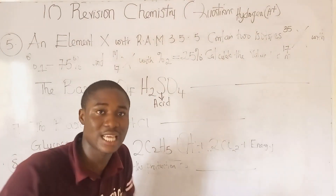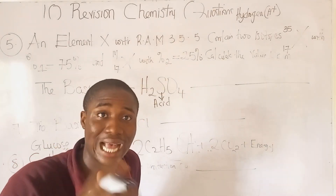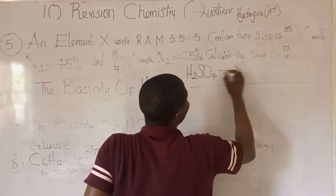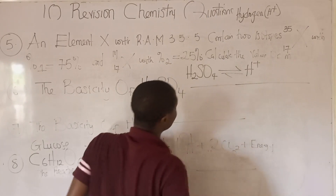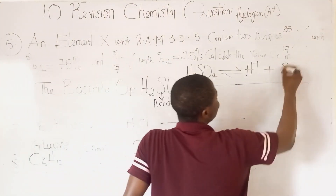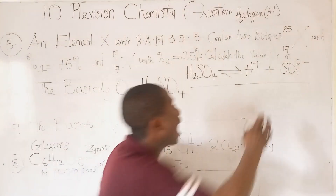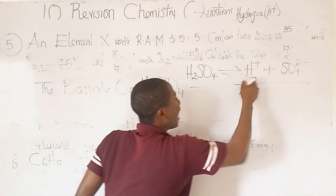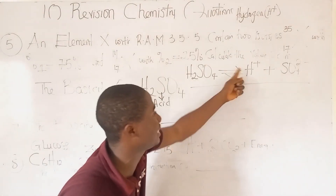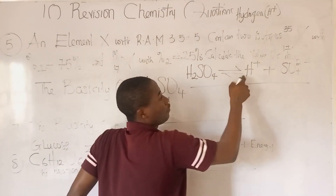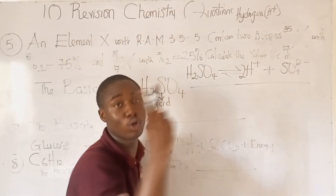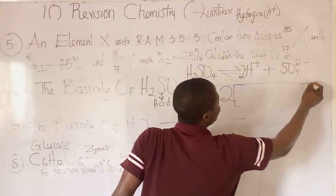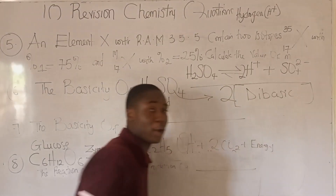To find the basicity, we take the acid and dissociate it. All inorganic acids contain hydrogen ions. For H₂SO₄: H₂SO₄ → H⁺ + SO₄²⁻. Radicals are groups of atoms bearing a single charge. The reaction is not balanced for hydrogen — the coefficient needed for H⁺ is 2, because hydrogen in H₂SO₄ was 2. So the basicity of H₂SO₄ is 2, meaning it is dibasic.